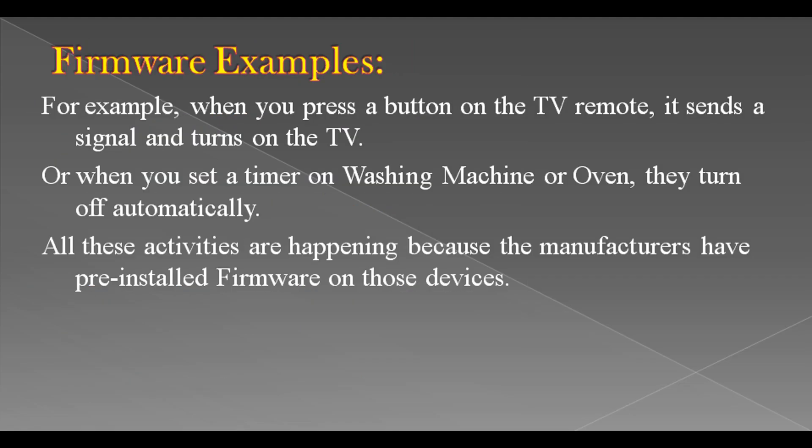For example, when you press a button on the TV remote, it sends a signal and turns on the TV. Or when you set a timer on a washing machine or oven, they turn off automatically. All these activities are happening because the manufacturers have pre-installed firmware on those devices.